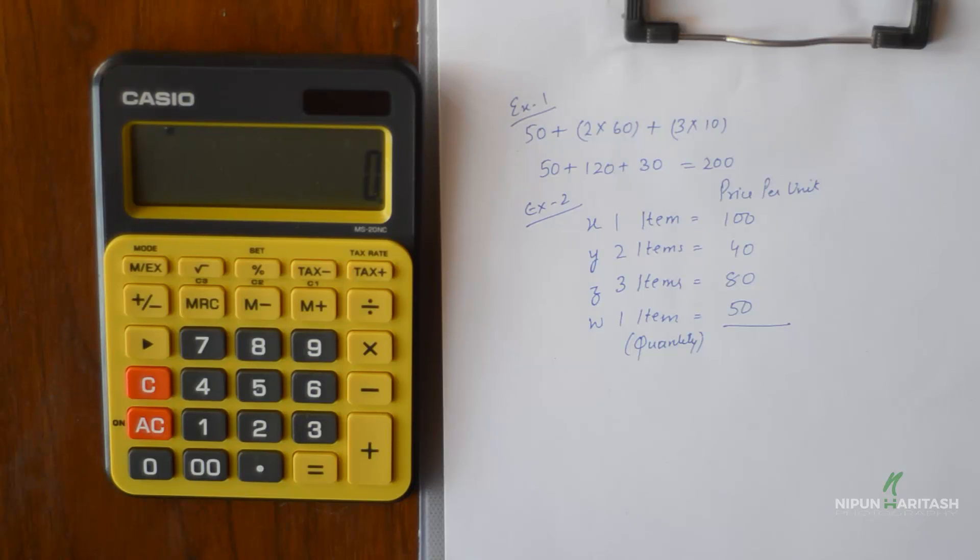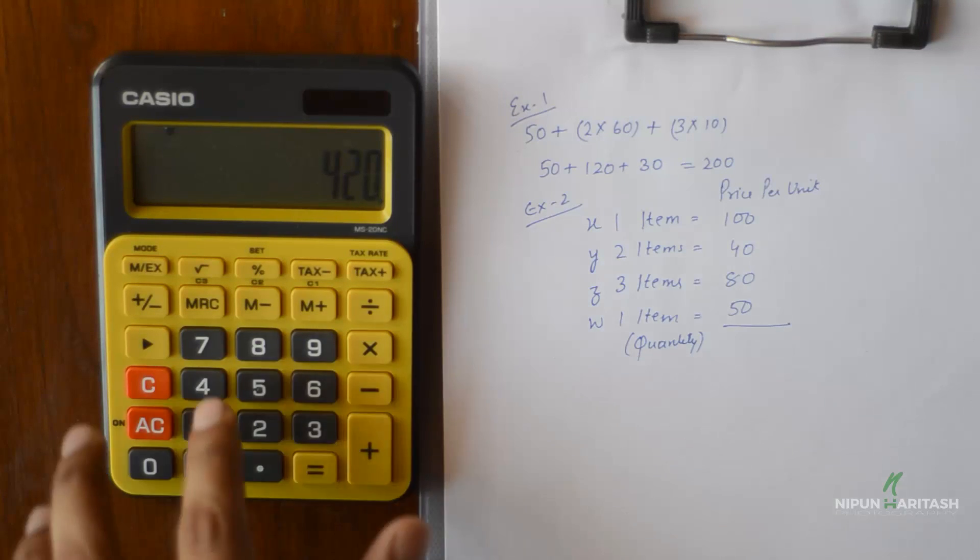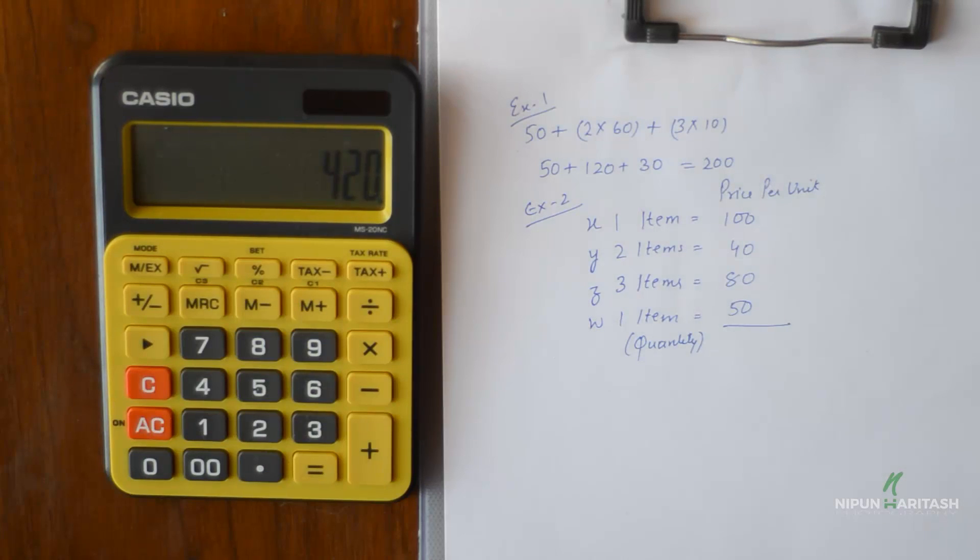MRC key tells you the value which is currently stored in the memory of the calculator. For example, if you press MRC, it shows me a previously stored value which is 420. I would have done some calculation in the past and 420 would have been the sum of that calculation. So how do you get rid of this? How do you start from scratch? You press MRC twice and it'll be gone.